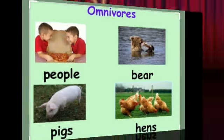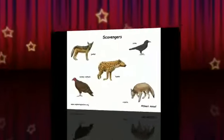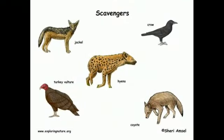There is one more type — they are called scavengers. Scavengers are those animals which eat the flesh of dead animals. Examples are turkey, vulture, and jackal. They all eat the flesh of dead animals, so they are called scavengers.